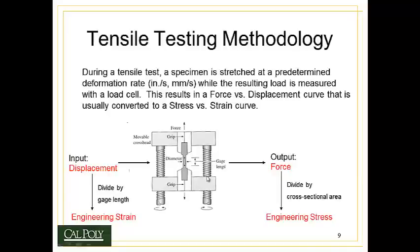Those grips are slowly pulled apart by two large screws that are rotating. We measure how far apart those grips are pulling versus the force required to keep pulling them apart at a steady rate. The input to the machine is the displacement, or how much we're pulling apart the sample. The output is the force, or how hard the material resists being pulled apart. We then take that displacement and divide it by the gauge length — a nominal dimension across the narrow section of the tensile specimen called the gauge. When I divide by the gauge length, I get what's called the engineering strain.